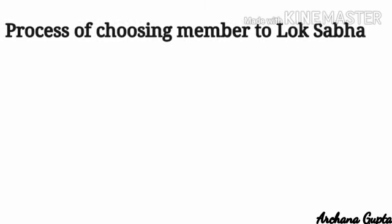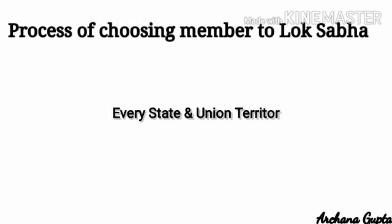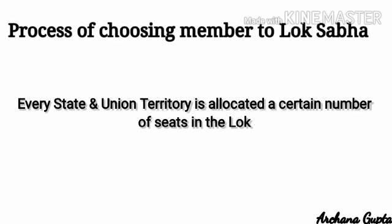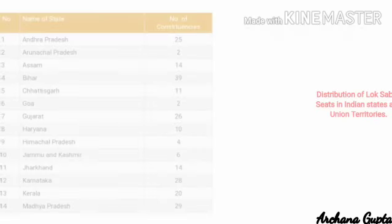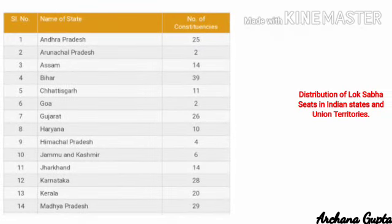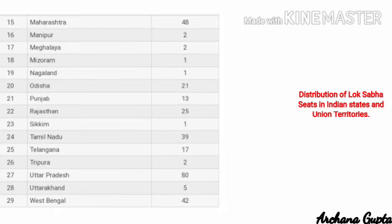Every state and Union territory is allotted a certain number of seats in the Lok Sabha based on their respective population. For example, Uttar Pradesh has 80 seats, Maharashtra has 48 seats, and states with small populations like Mizoram, Nagaland, and Sikkim have only one seat each in the Lok Sabha.